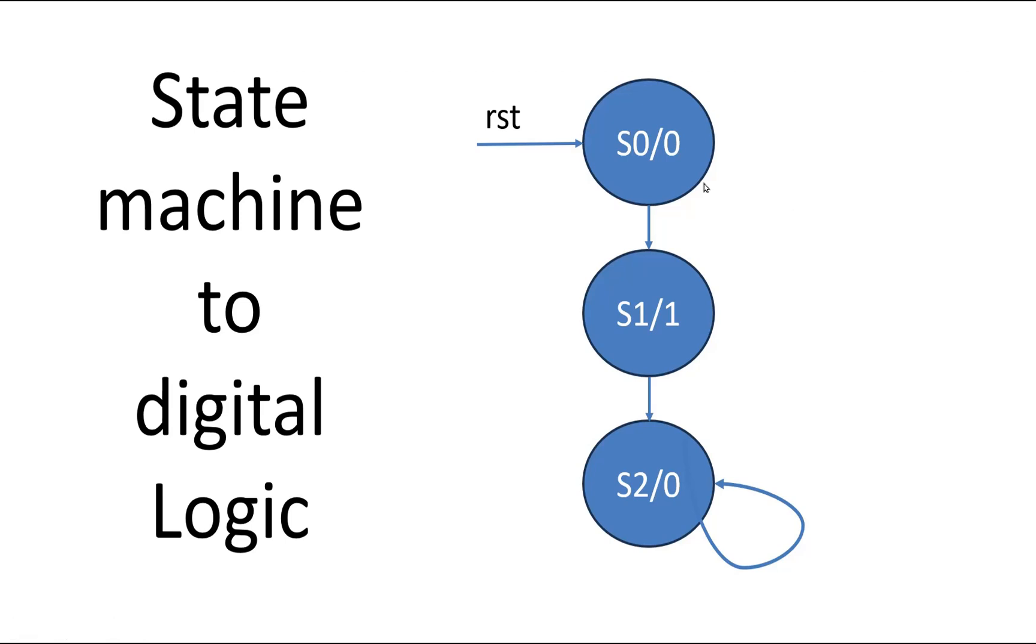Friends, the challenge is on your screen and it is very simple. Most of you would have studied this concept in your graduation or post graduation. Given is a state machine with three states: S0, S1, and S2.